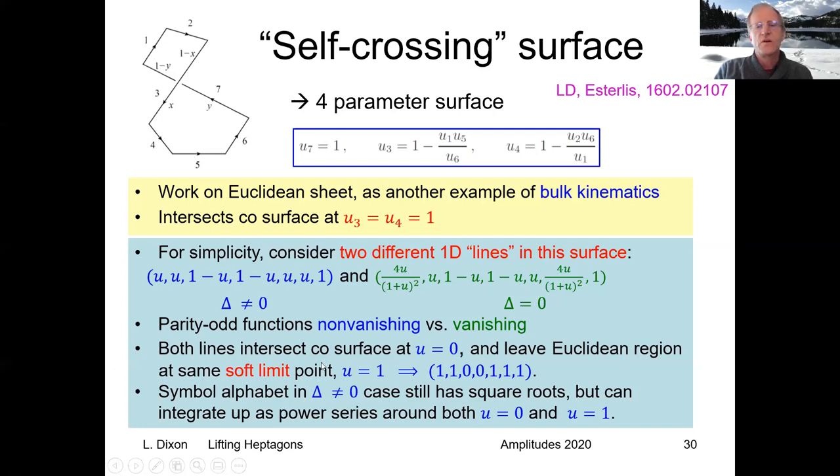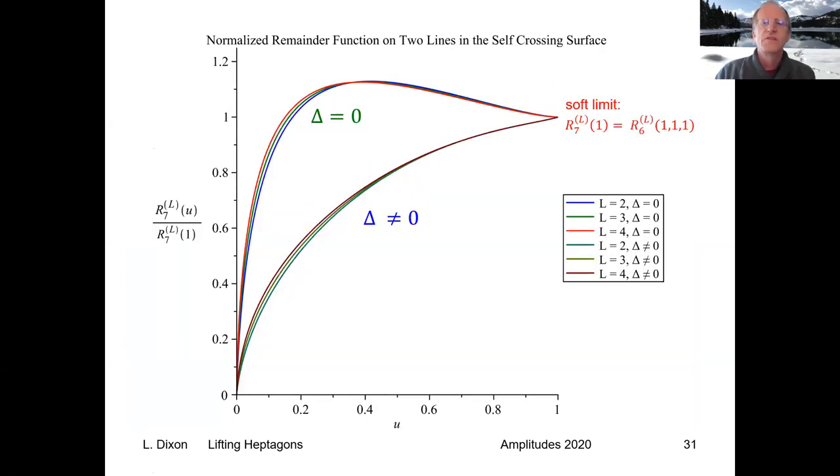In this case, we can expand from both sides because we know both limits. But in general, you can use a power series technique. Although in at least one case we have some polylogarithmic representations. So this is the answer. Here I've presented it in a different way. I've divided the remainder function, which vanishes on one end, by the value on the other end, which is actually equal to the six-point value at this nice symmetric point. You can see that as you go from one loop to another, the shape hardly changes at all. So things are fairly smooth in the bulk, which is a feature we've seen in the six-point case as well.